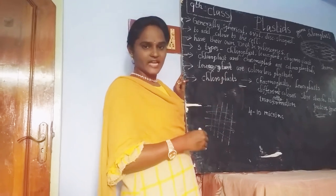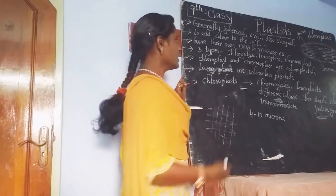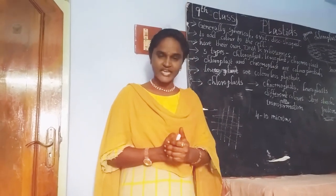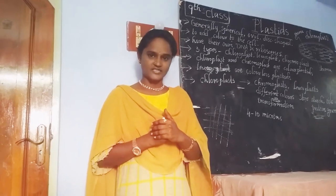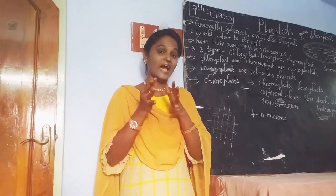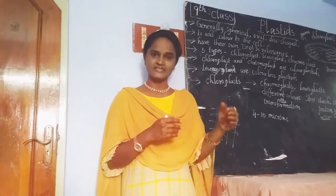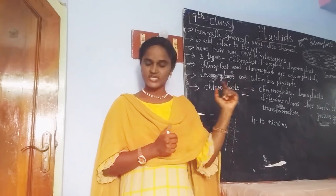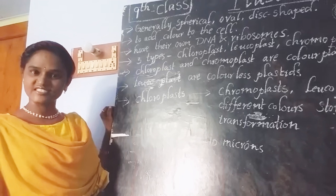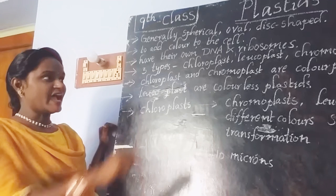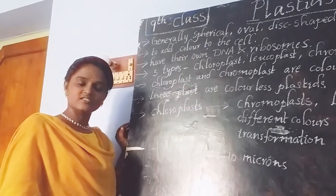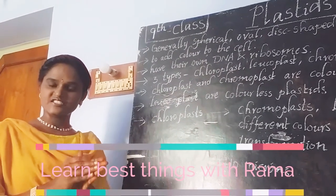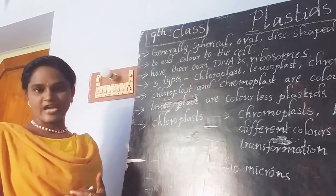The size and shape of plastids varies from one plant to another. If we talk about the function of plastids, it is very important. They mainly involve in the function of adding color to the cell. Most cells in plants are transparent, but some cells carry colors because of the presence of plastids. The main function of plastids is to add color to the cell.